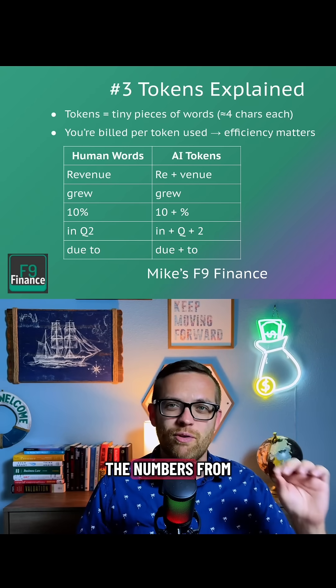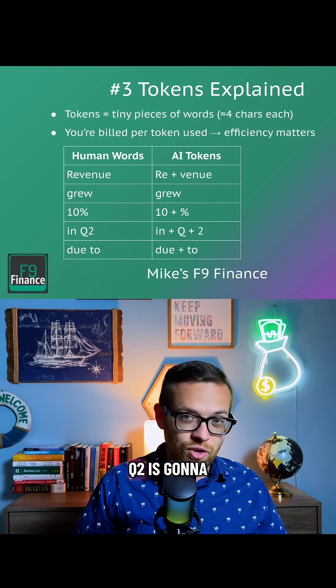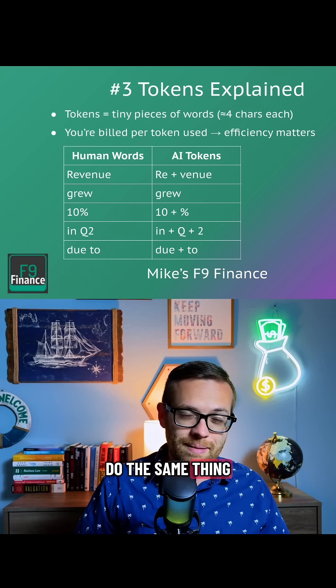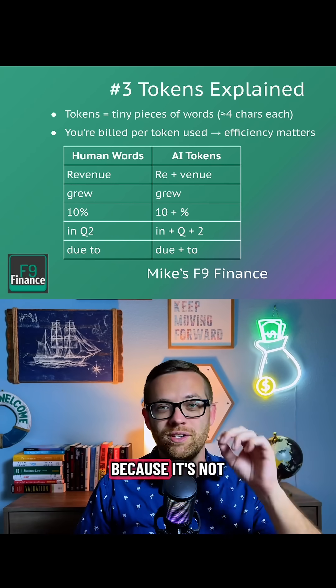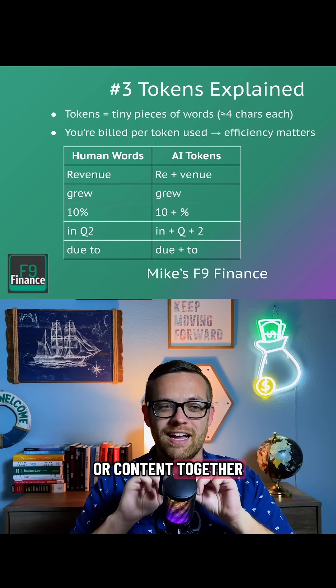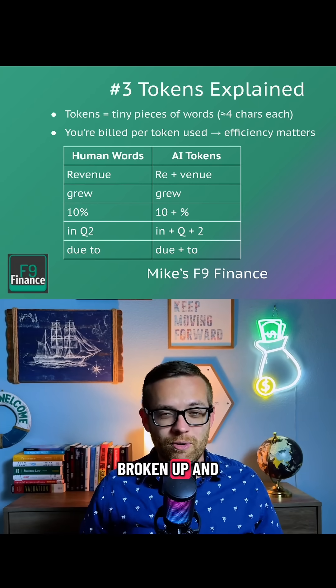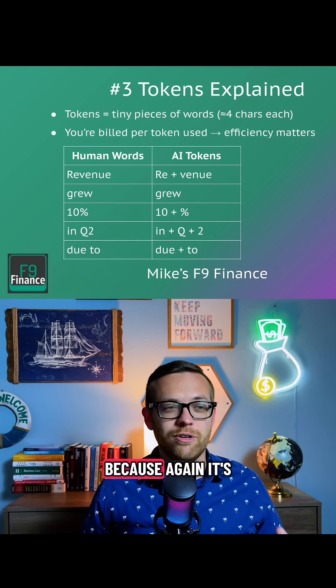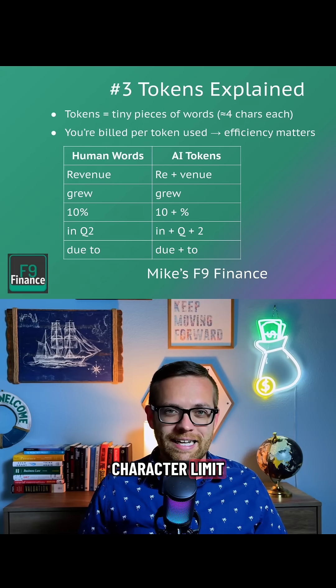'10%' will be split into '10' and 'percent,' because it's going to break up different kinds of language — separating numbers from symbols. 'Q2' is going to do the same thing: it's going to separate into 'Q' and '2,' because it doesn't put different types of text or content together. And 'due to' will just stay as the words, because it's below that four-character limit.